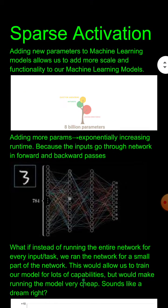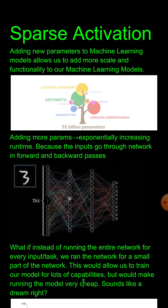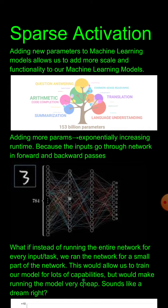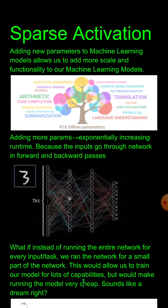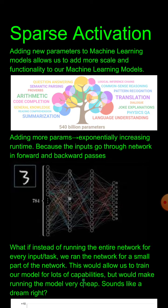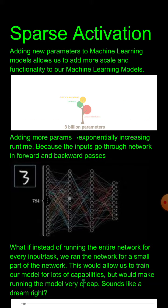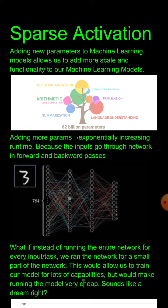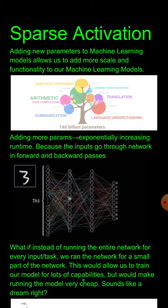However, it is also well known that adding more parameters will exponentially increase the runtime of your network, because every time you put an input through a network to train, it has to go through both forward and backward passes. So having more parameters increases your decision space exponentially.